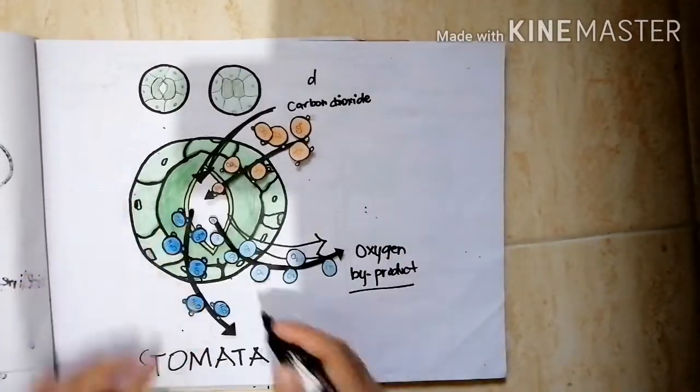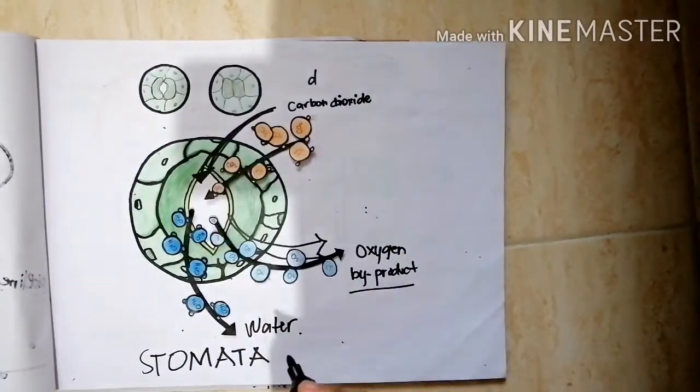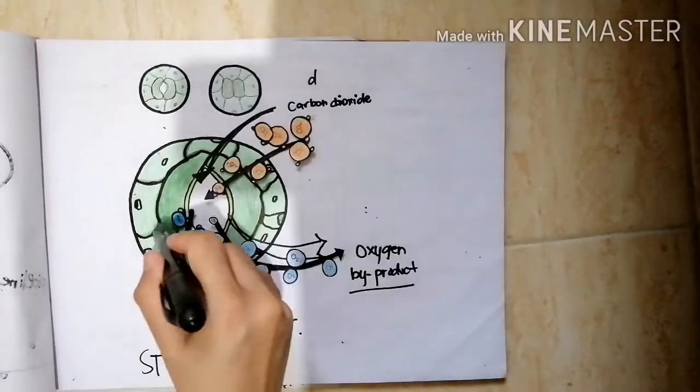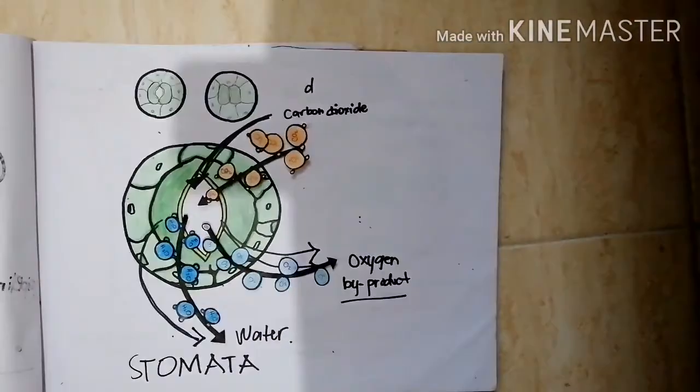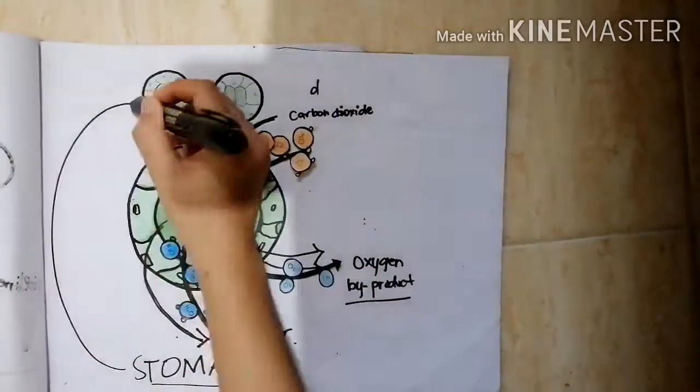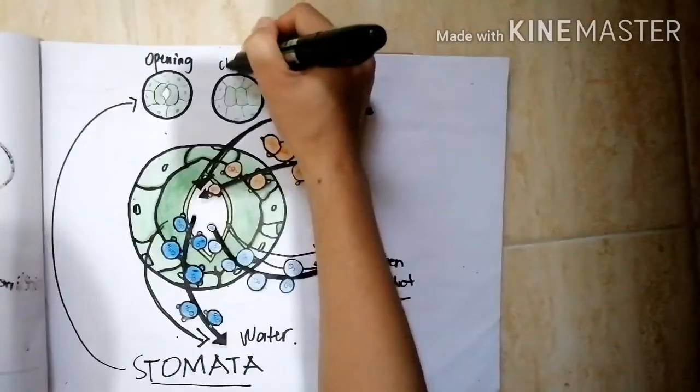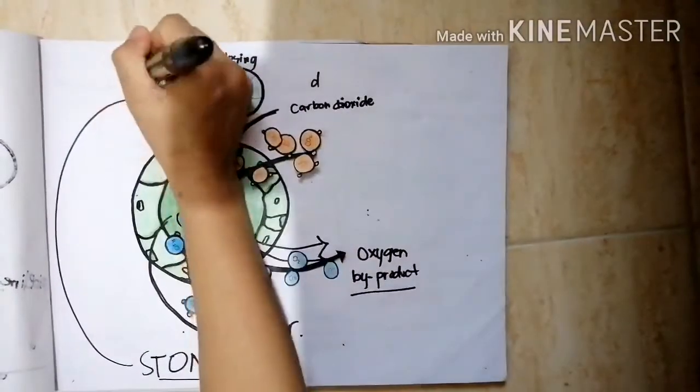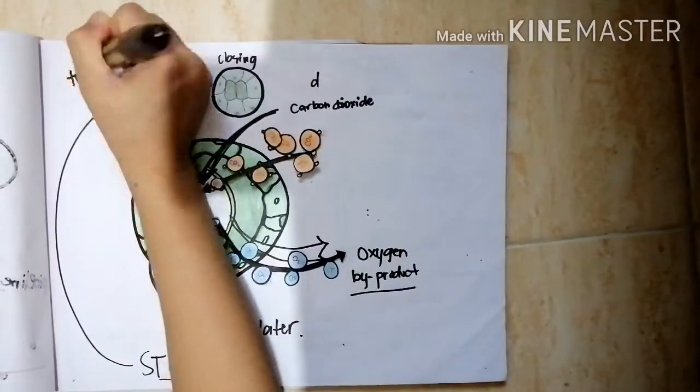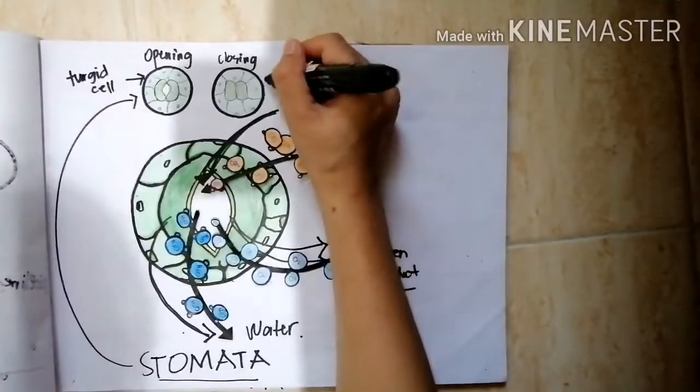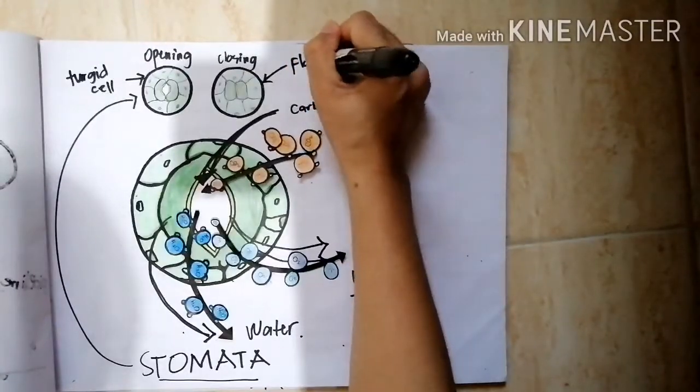Simultaneously, water vapor present in the leaf also diffuses out into the atmosphere through stomata. The guard cell in the stomata has its opening and closing. The cells will be open when the cell is turgid and it will be closed when the cell is flaccid.